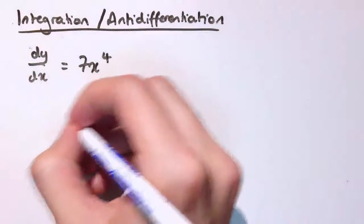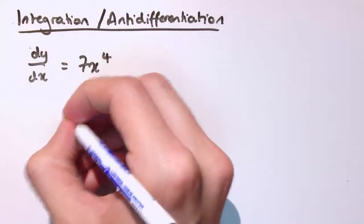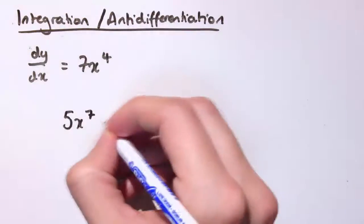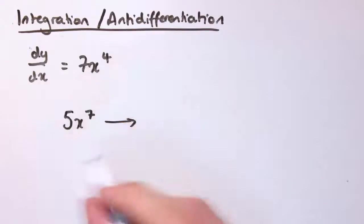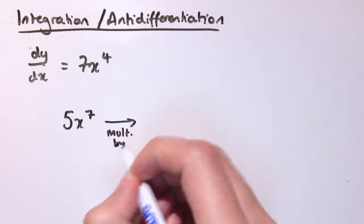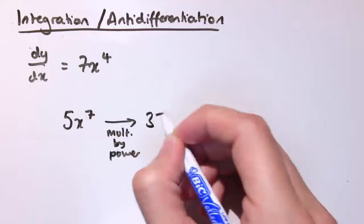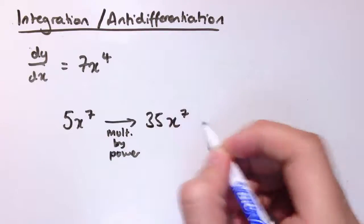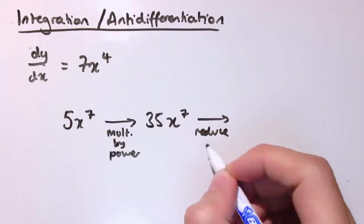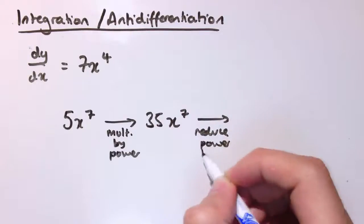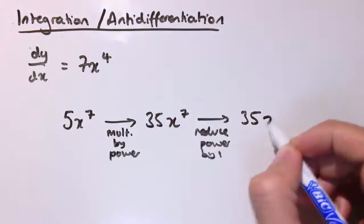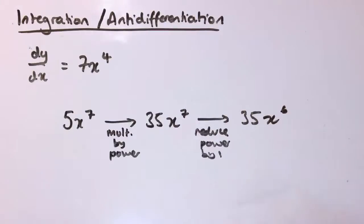So, when I have, let's say, 5x⁷, and I differentiate it, what we do is we multiply by the power, so we get 35x⁷, and then we reduce the power by 1, we replace n with n-1, so dy/dx here would be 35x⁶.